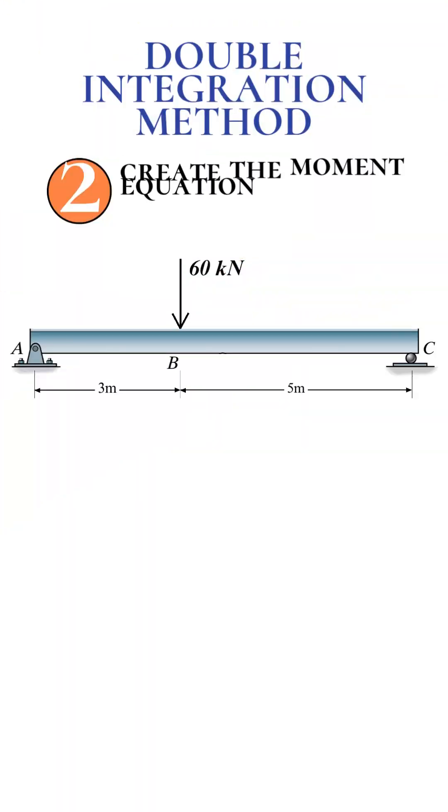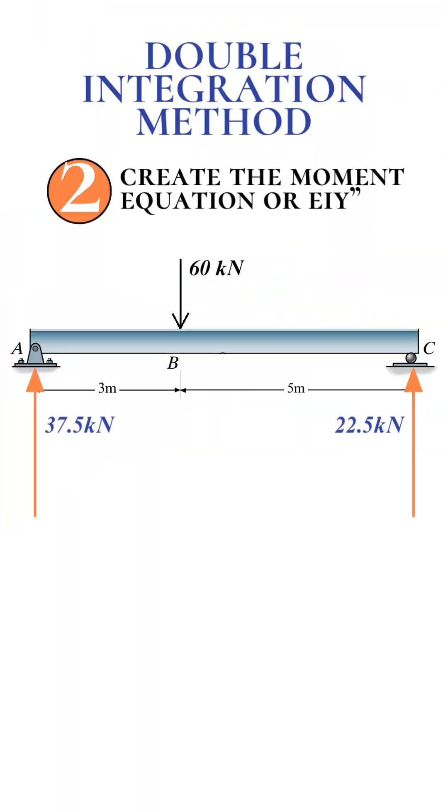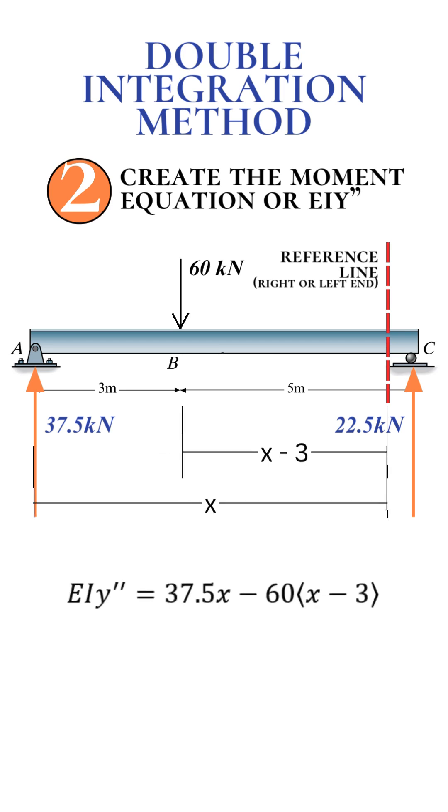Step 2: Create the moment equation or EIY double prime. Next, identify the distances from a chosen reference line, usually from the left end, point A, to the location of loads and supports.